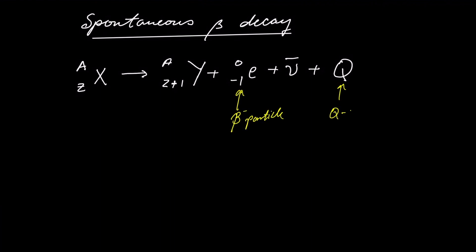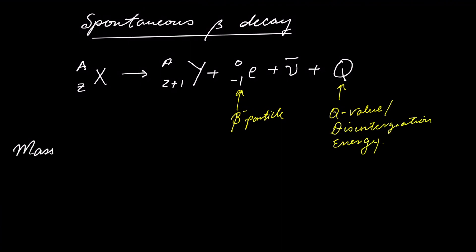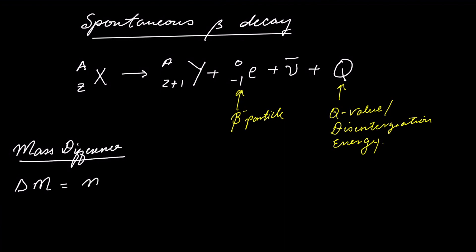How can we calculate this Q value? To calculate the Q value we use the mass difference between the reactants and products. When we look at this expression above we only have one reactant, which is just that element X.